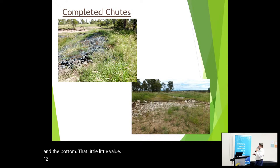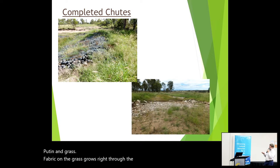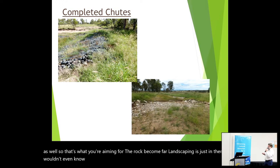These are more examples of chutes that have been put in and grassed up. Even with geofabric on, grass grows right through the rock eventually. That one's got wire netting over it as well — that's what you're aiming for. The rock becomes part of the landscape and you wouldn't even know it was there after a while. Another one there, just in red soil.